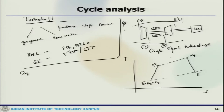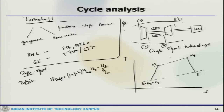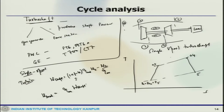For the single spool engine, the turbine drives both the compressor and the load. Assuming full expansion in the turbine, the shaft power is: W_shaft = (1 + F − B) × η_MT × W_T − W_C / η_MC, where F is the fuel-air ratio, B is the bleed ratio, η_MT is mechanical efficiency, and η_MC is compressor efficiency. The load power W_load = η_M × W_shaft, and P_load = ṁ_A × W_load.